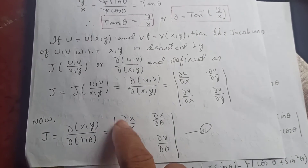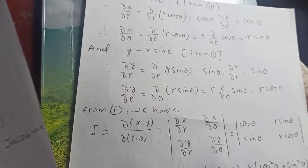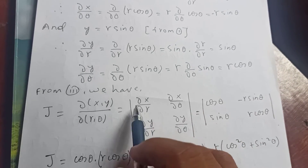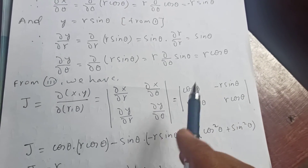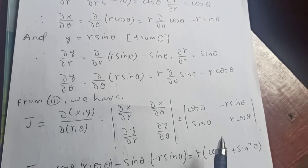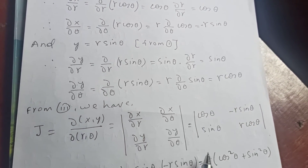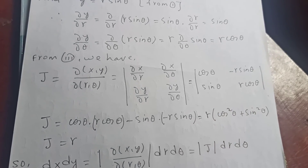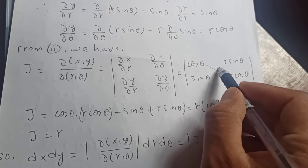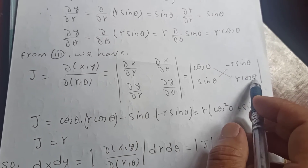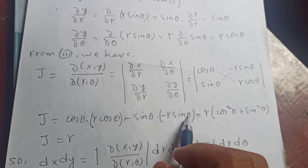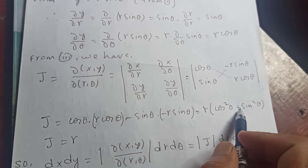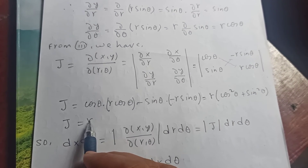We have now found all four partial derivatives. Substituting into the Jacobian: J = ∂(x,y)/∂(r,θ) = |cosθ, −r sinθ; sinθ, r cosθ|. Evaluating the determinant: J = cosθ · r cosθ − (−r sinθ) · sinθ = r cos²θ + r sin²θ = r(cos²θ + sin²θ) = r. So the Jacobian J = r.